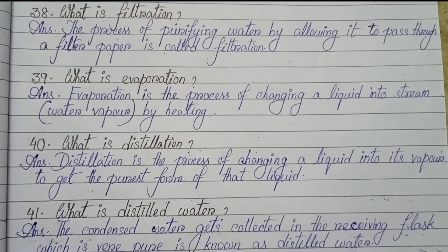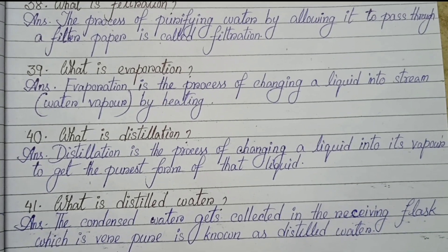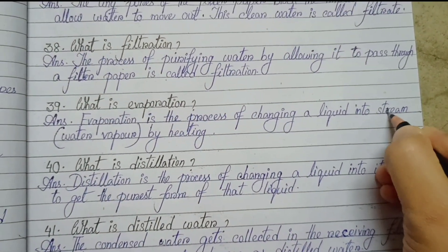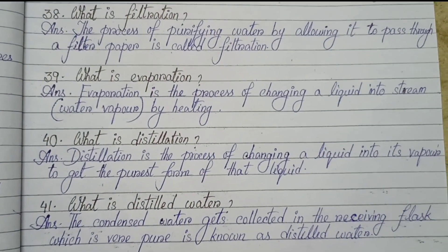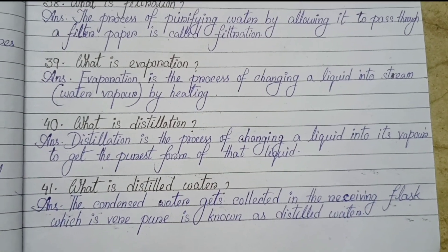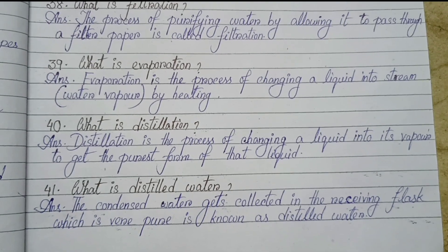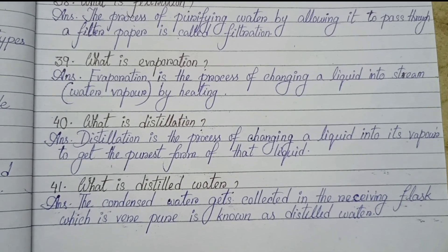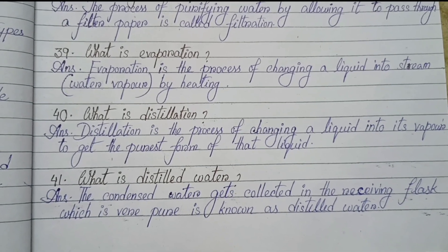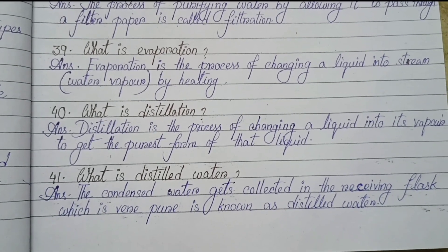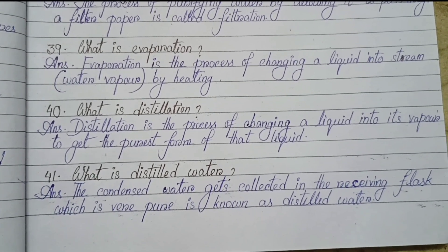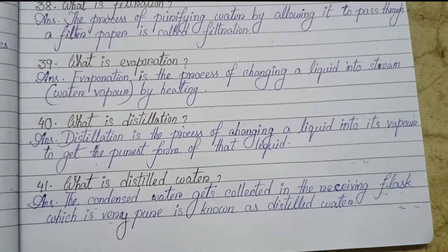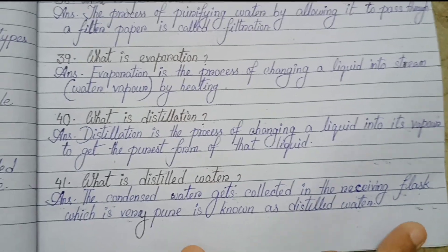What is evaporation? Evaporation is the process of changing a liquid into water vapor by heating. What is distillation? Distillation is the process of changing a liquid into its vapor to get the purest form of that liquid. Number 41: What is distilled water? The condensed water that gets collected in the receiving flask, which is very pure, is known as distilled water.